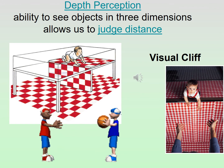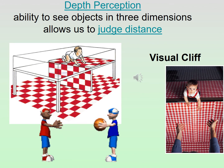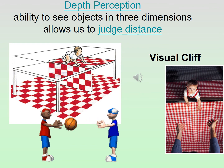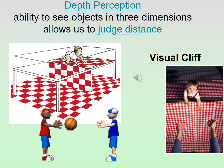We know that animals, as soon as they're born and can move around, have depth perception — if they got to the edge of a cliff, they would not just walk off. Of course, you can't test a child by putting them on the edge of a cliff. However, two researchers, Gibson and Walk, had their young child at the Grand Canyon and asked: would a young child just crawl off the side, or do we have depth perception once we can crawl?